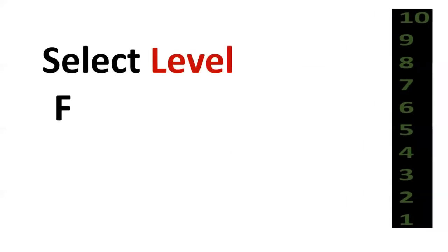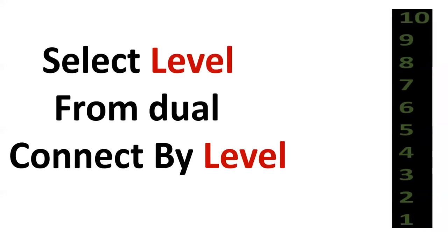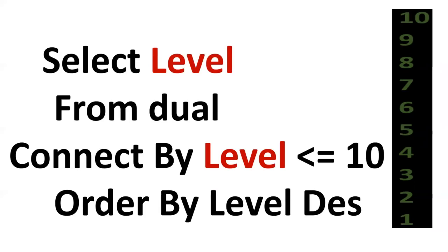Next, we need to print 1 to 10 numbers in reverse manner. First, by using CONNECT BY LEVEL we can achieve 1 to 10 numbers, but we want to print 10 to 1. So by using an ORDER BY clause — specifically ORDER BY LEVEL DESCENDING — we can achieve this.